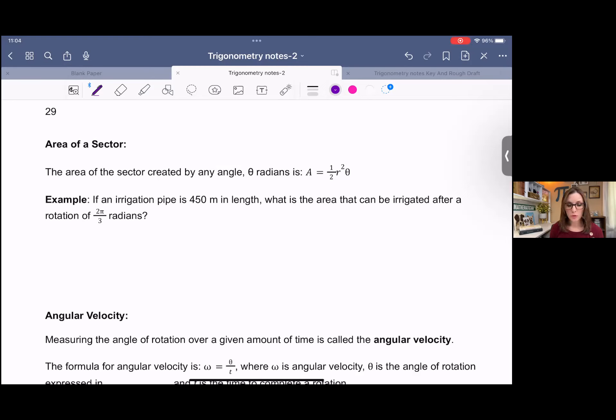If an irrigation pipe is 450 meters in length, what is the area that can be irrigated after a rotation of 2 pi over 3 radians? And remember, if you're given degrees instead, then you need to convert to radians before you can get started on this problem. So we're just going to take half the radius times the angle.